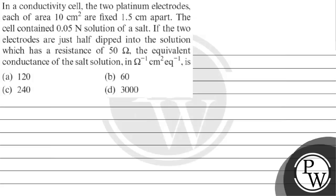Let's read this question. The question says: in a conductivity cell, two platinum electrodes, each of area 10 cm², are fixed 1.5 cm apart. The cell contains 0.05 normal solution of a salt. If the two electrodes are just half dipped into the solution, which has a resistance of 50 ohm, the equivalent conductance of the salt solution in ohm inverse cm² equivalent inverse is — option A: 120, option B: 60, option C: 240, option D: 3000.